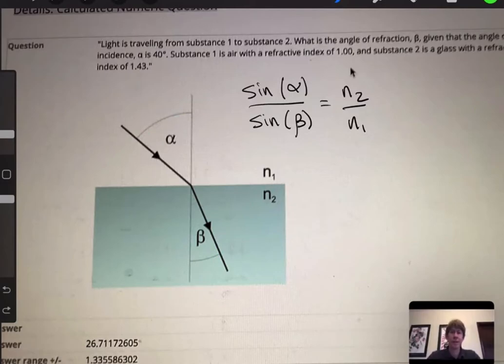We're doing Snell's law to solve for the angle beta. The question states: light is traveling from substance one to substance two. The arrows are pointing towards substance two, which is down here, whereas substance one is up here.